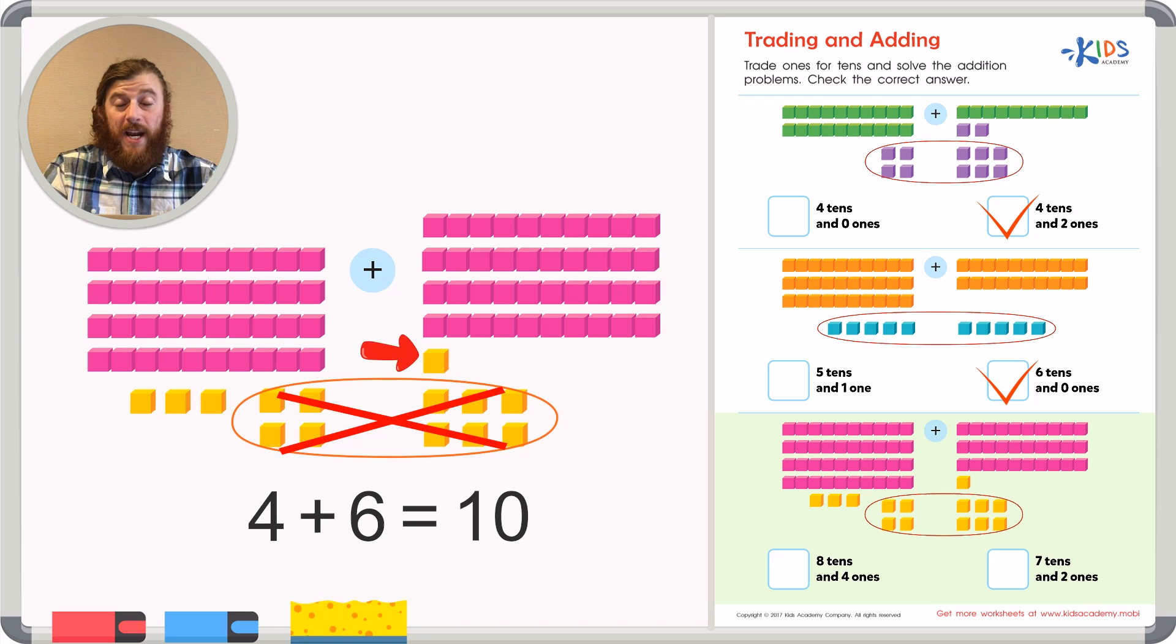Let's count the total tens and ones to see how many there are in total. I have one, two, three, four, five, six, seven, eight tens and one, two, three, four ones, making my final answer eight tens and four ones.